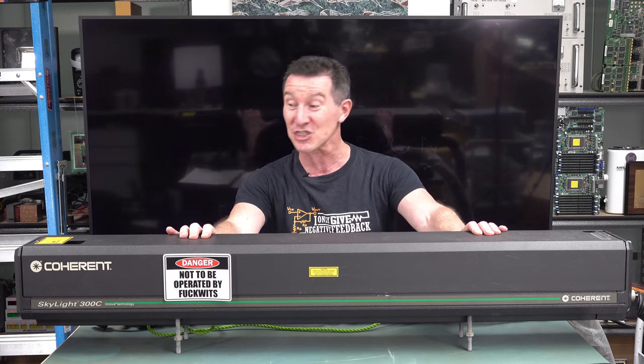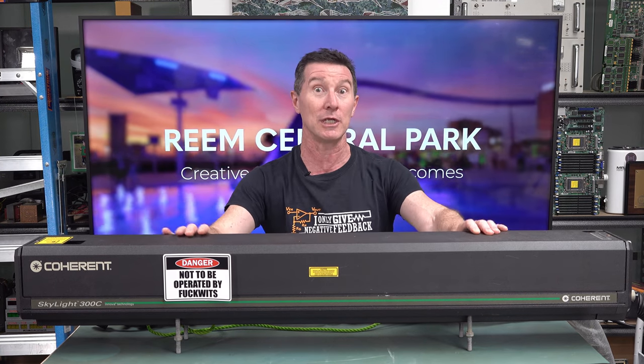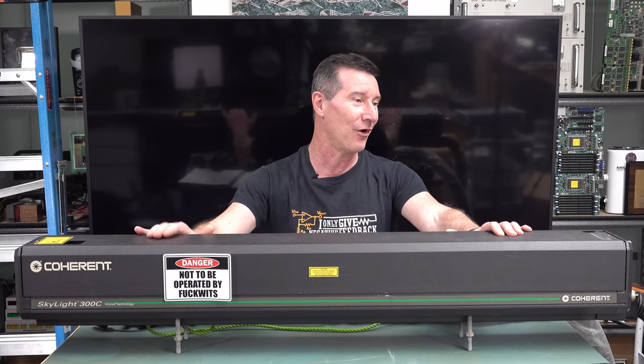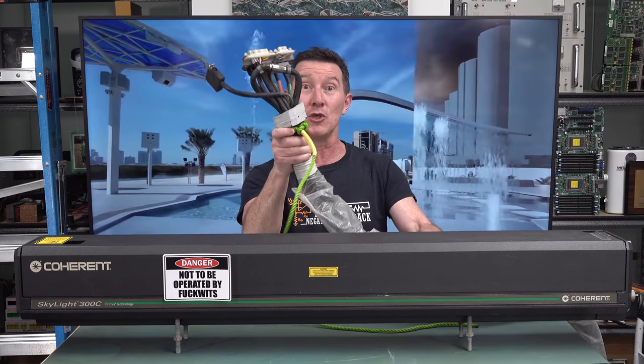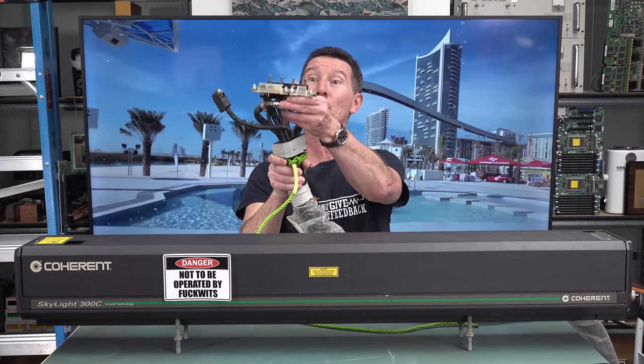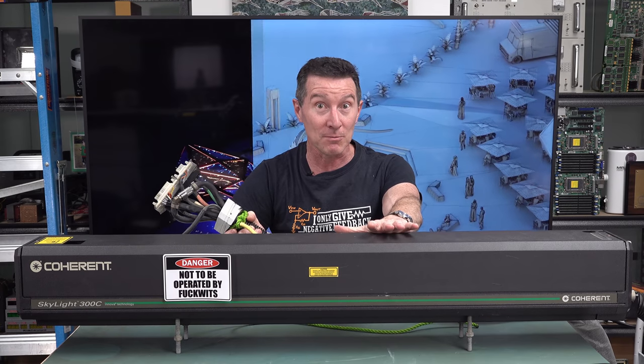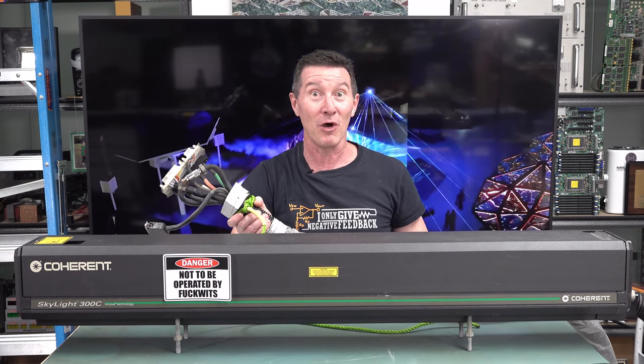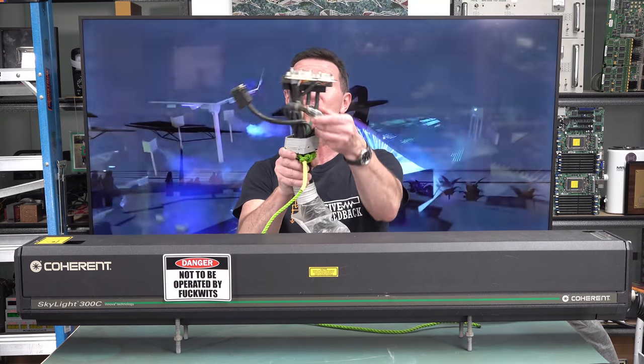Daryl actually designed most of the control systems for Laser Vision Australia. And we've done a one-hour Amp Hour episode podcast linked down below with Daryl talking about the design of all these systems. They're absolutely fantastic. Highly recommend you watch that down below. Anyway, this is a coherent Skylight 300C Innova Technology 10-watt argon-ion laser. Oh man, what a bad boy. 42 kilos worth. Water-cooled.